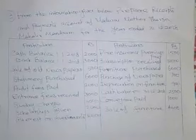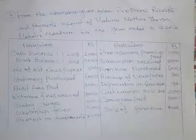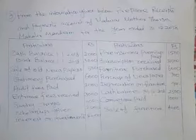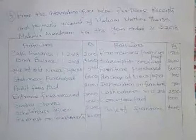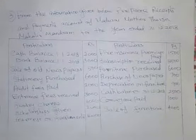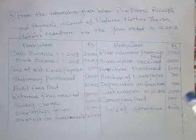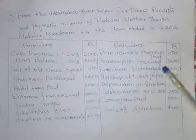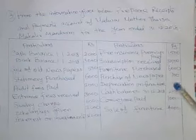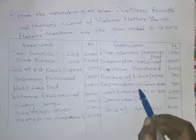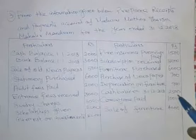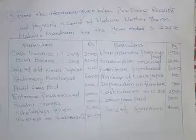Now third sum. From the information given below, prepare Receipts and Payments Account of Madurai Mother Tharsha Mahalir Mandram for the year ended 31st December 2018. Items include: cash balance, bank balance, sale of old newspaper, stationary purchased, audit fees paid, entrance fees received, sundry charges, scholarship given, interest on investment, fire insurance premium paid, subscription received, furniture purchased, purchase of newspaper. Depreciation on furniture is a non-cash item — not entered in Receipts and Payments Account. Closing cash balance, conveyance paid, sale of furniture.